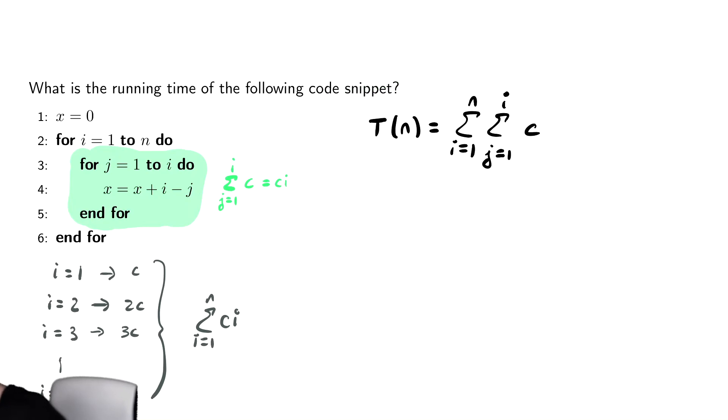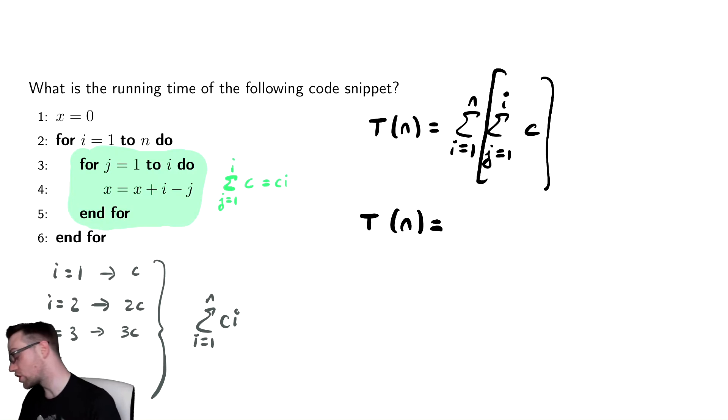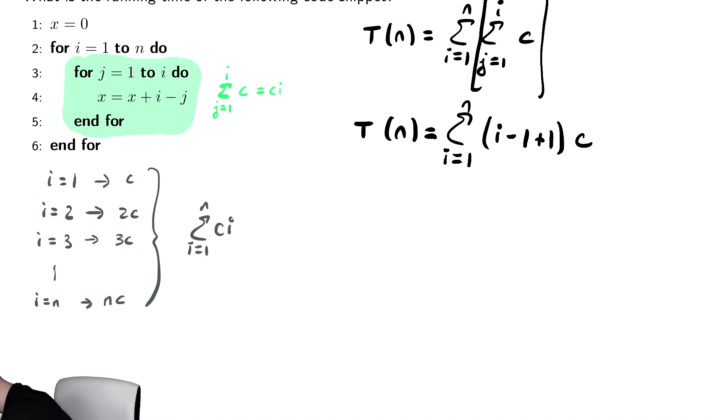And now we have a set of summations to analyze. So we always begin when we have multiple summations with the innermost summations. So we begin with that summation and then work our way outwards. So we're going to leave that sum from one to N untouched. And then we need to find the number of terms. The number of terms of that summation is the top bound minus the bottom bound plus one times C.